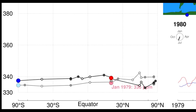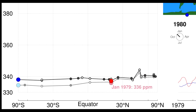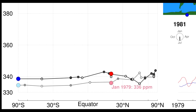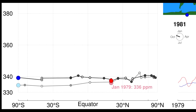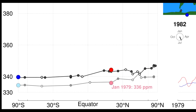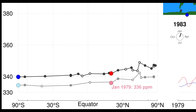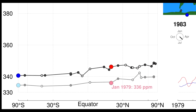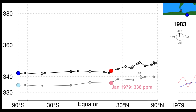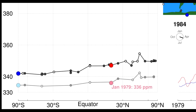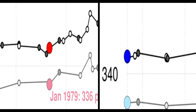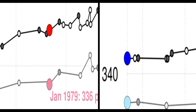Then CO2 levels begin to rise again during the later months when the trees have less leaves and are performing less photosynthesis. The opposite is seen in the southern hemisphere because, as you know, in the southern hemisphere winter is summer and summer is winter. We can see this in the CO2 data.